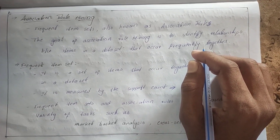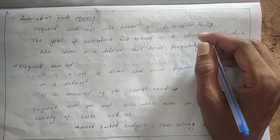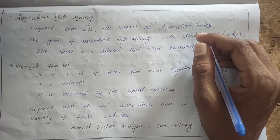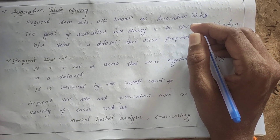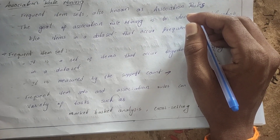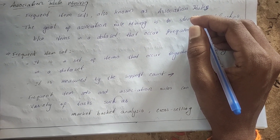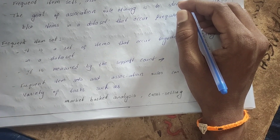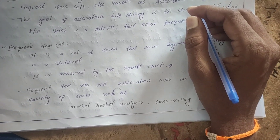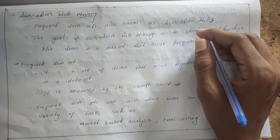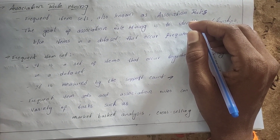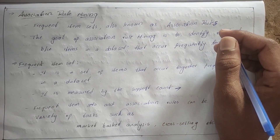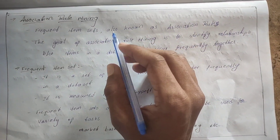Welcome back to my channel, The Machine Brain. Today we will discuss association rule mining. So far we have discussed data pre-processing, characteristics of data mining, advantages and disadvantages, types of data mining, and steps involved in data pre-processing. Today we will discuss association rule mining and the methods involving it.